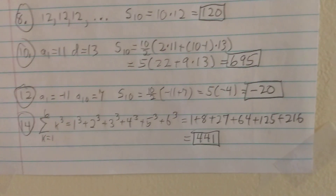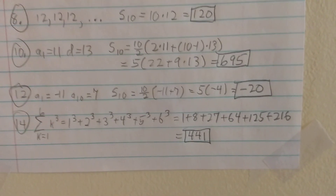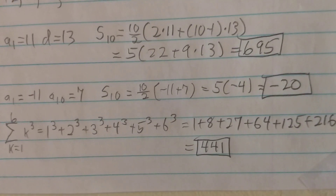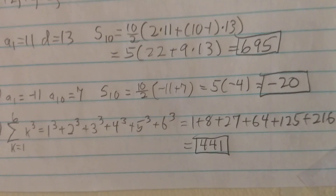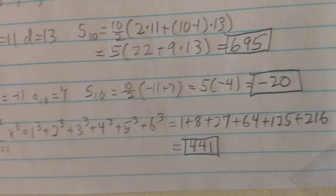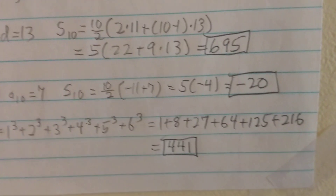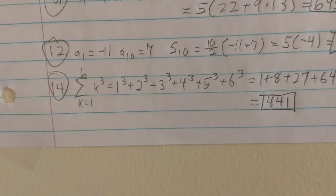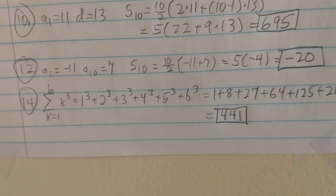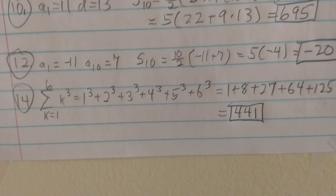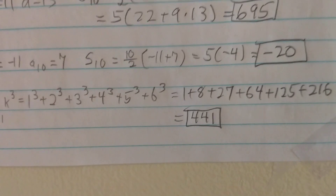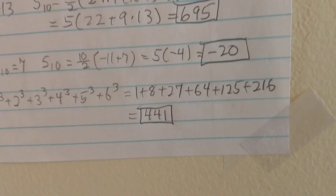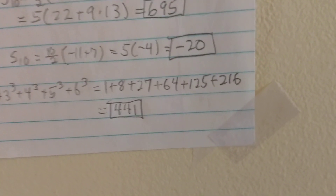For problem 10, with a1 equals 11 and d equals 13, S sub 10 is 10 over 2 times 2 times 11 plus 10 minus 1 times 13. Using the calculator: 5 times the quantity 22 plus 9 times 13 gives 695. For problem 12, a1 is negative 11 and a10 is 7. So S10 is 10 over 2 times negative 11 plus 7, which is 5 times negative 4, giving negative 20.